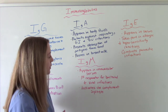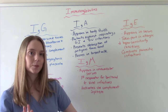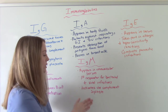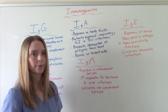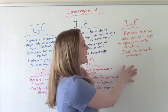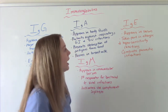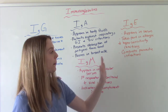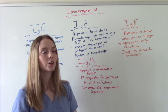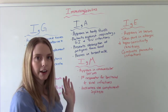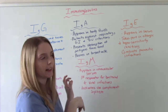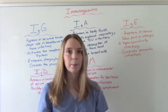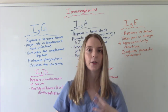IgM appears in the intravascular serum. It is the first responder if you have a bacterial or viral infection, and it also helps to activate the complement system. Finally, IgE appears in the serum and takes part in allergic and hypersensitivity reactions, and it combats parasitic infections. They all work a little bit differently for different types of infections and are found in a couple of different places. I just wanted to briefly introduce the different types of immunoglobulins so they're a little more familiar and comfortable.